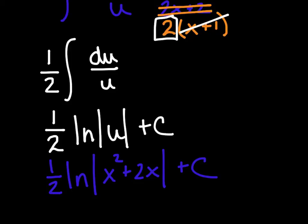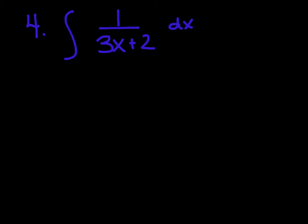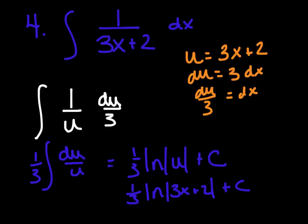Remember: pick the denominator when you have a fraction; if that doesn't work, try the numerator. For example 4, pause and try it on your own. The solution follows the same steps: pick u as the denominator, find du, substitute, pull out the constant, and apply the ln rule to get the answer.